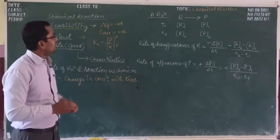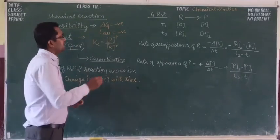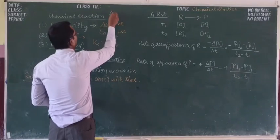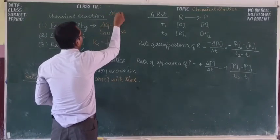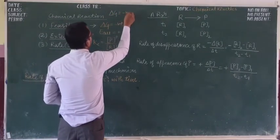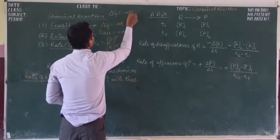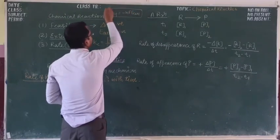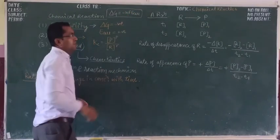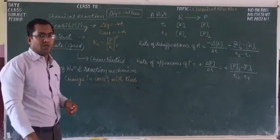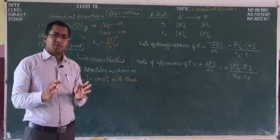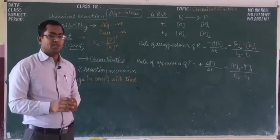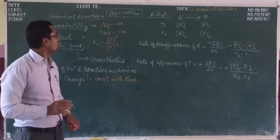The relation between delta G and E cell that we have studied before is: delta G is equal to minus N F E cell. So if your E cell value is positive, then delta G will automatically be negative, and the reaction will be spontaneous and feasible.